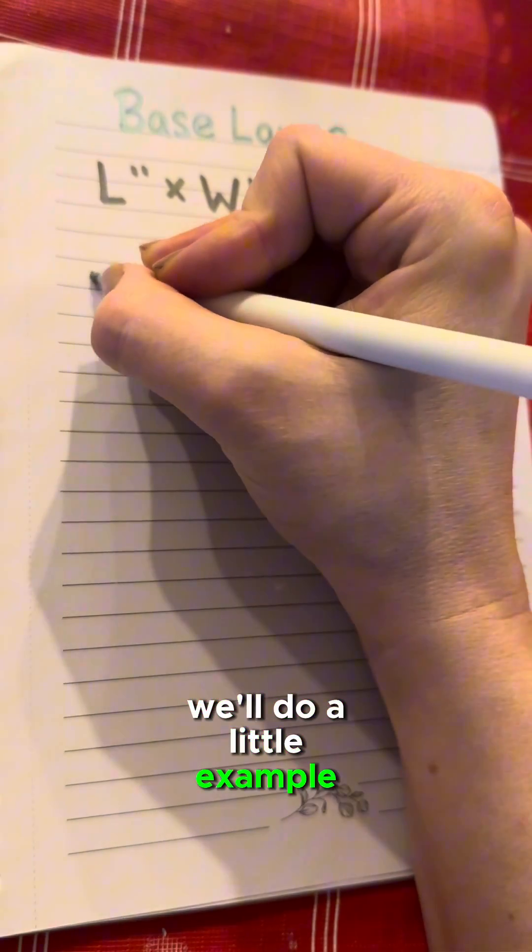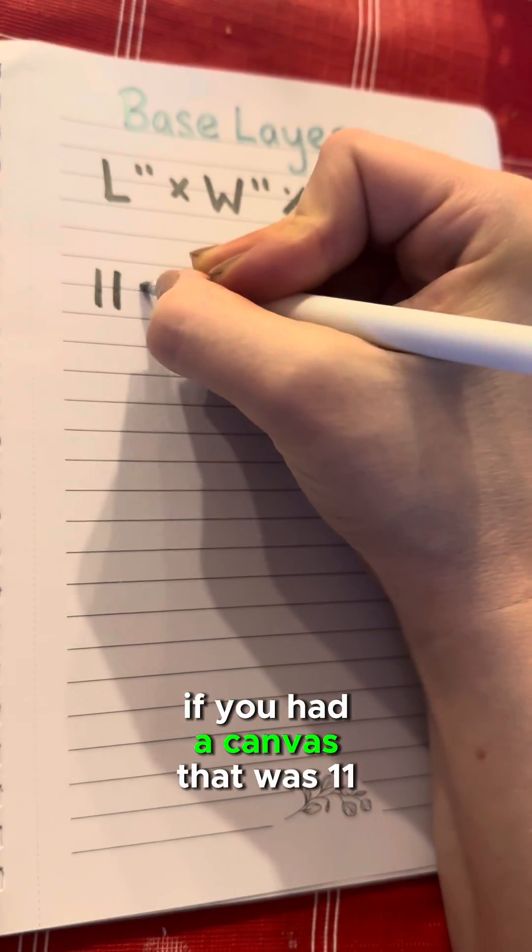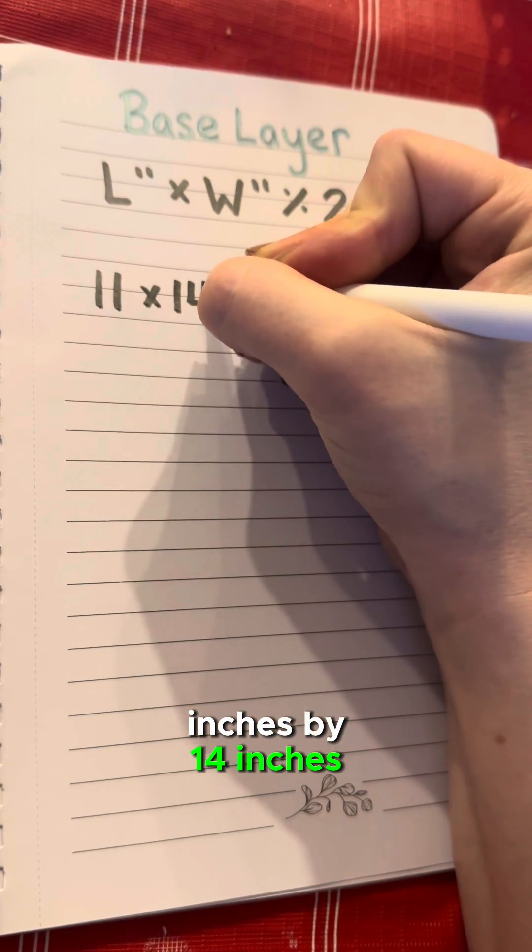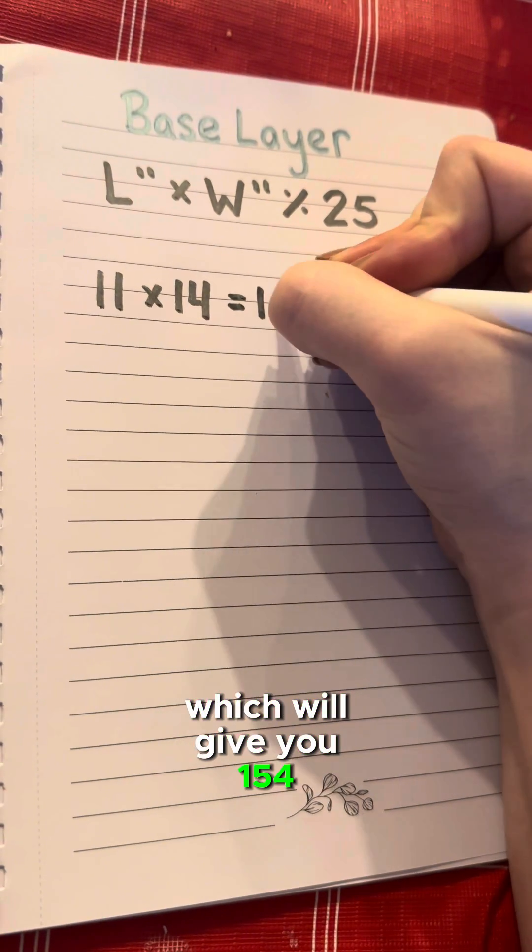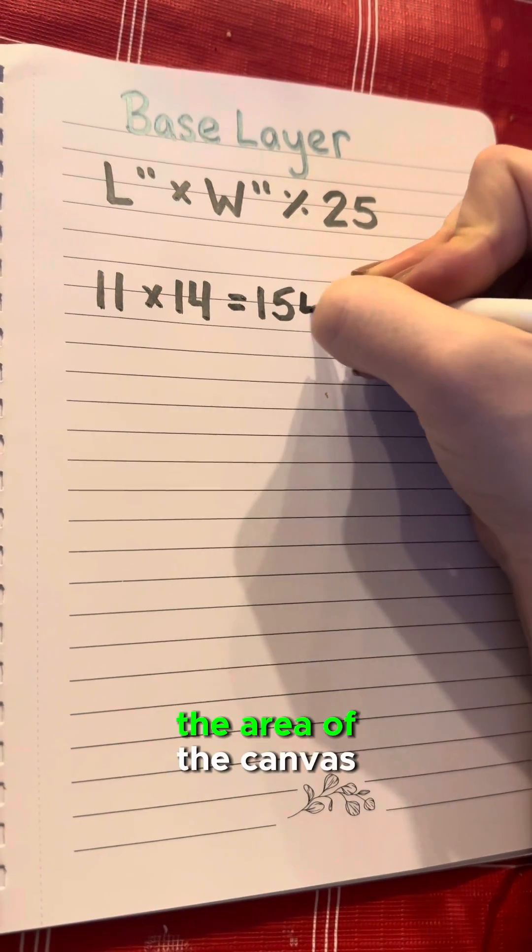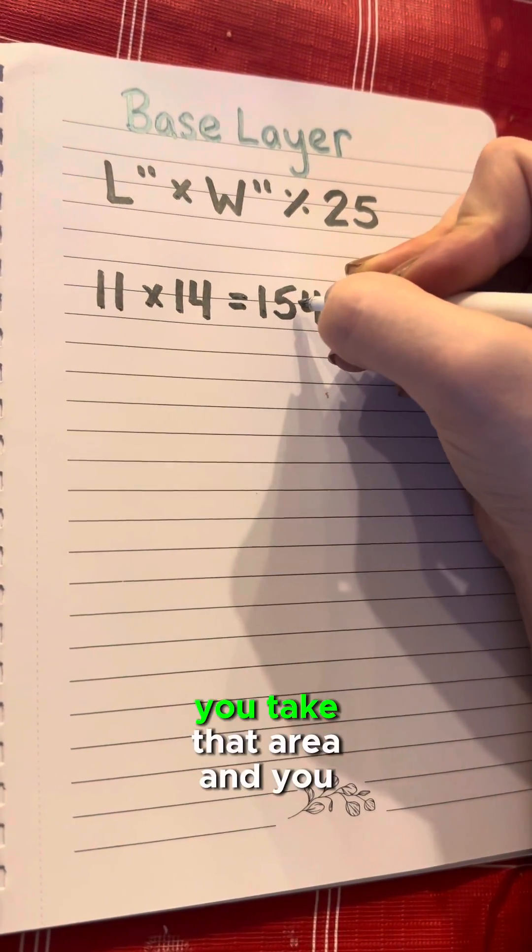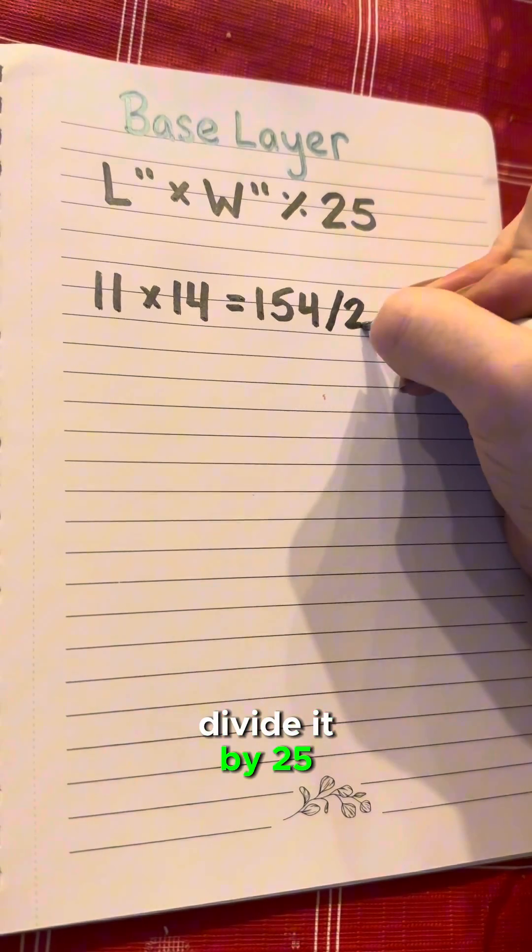We'll do a little example here. If you had a canvas that was 11 inches by 14 inches, you multiply that together which will give you 154, the area of the canvas. You take that area and you divide it by 25.